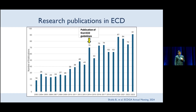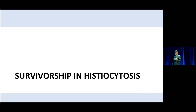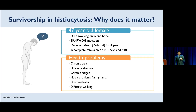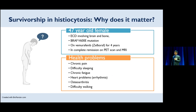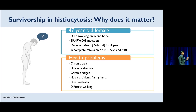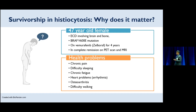Let's talk about survivorship. What got me interested in it? In clinic, I took care of a 70-year-old female who had ECD involving the brain and bone, found to have a BRAF mutation. She started vemurafenib, was on it for four years, and was in complete remission on PET scan and MRI. But when I asked her how she was doing, she was not doing well. She complained of many symptoms: chronic pain, difficulty sleeping, fatigue, heart problems, arthritis limiting her ability to walk, and cognitive issues. That really got me interested in survivorship.